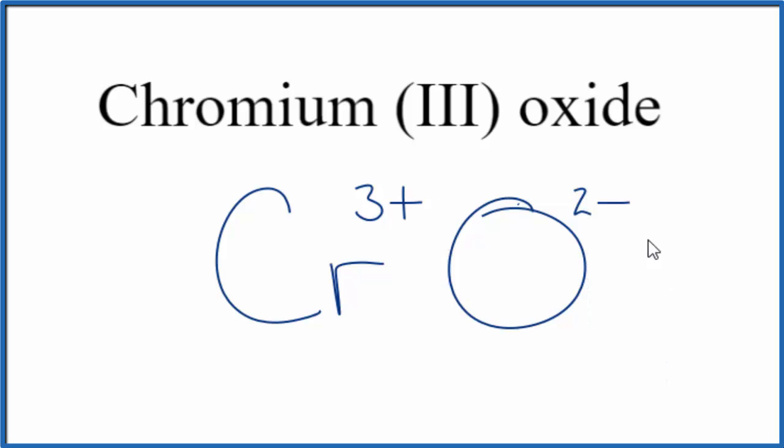To do that, we can use something called the criss-cross method to make it a little easier. We can move the two here, and the three here, and get rid of these symbols. And this is the formula for chromium three oxide, C R 2 O 3. But let's check our work.